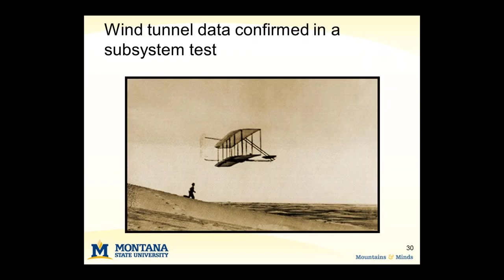After testing dozens of airfoils and gaining a good idea of what lift and drag should be like, they built a subsystem glider — not powered, just testing the wing design — along with the latest iteration of their in-flight control. They floated this glider, and you can see one of the Wright brothers chasing his glider down the sand dunes at Kitty Hawk.